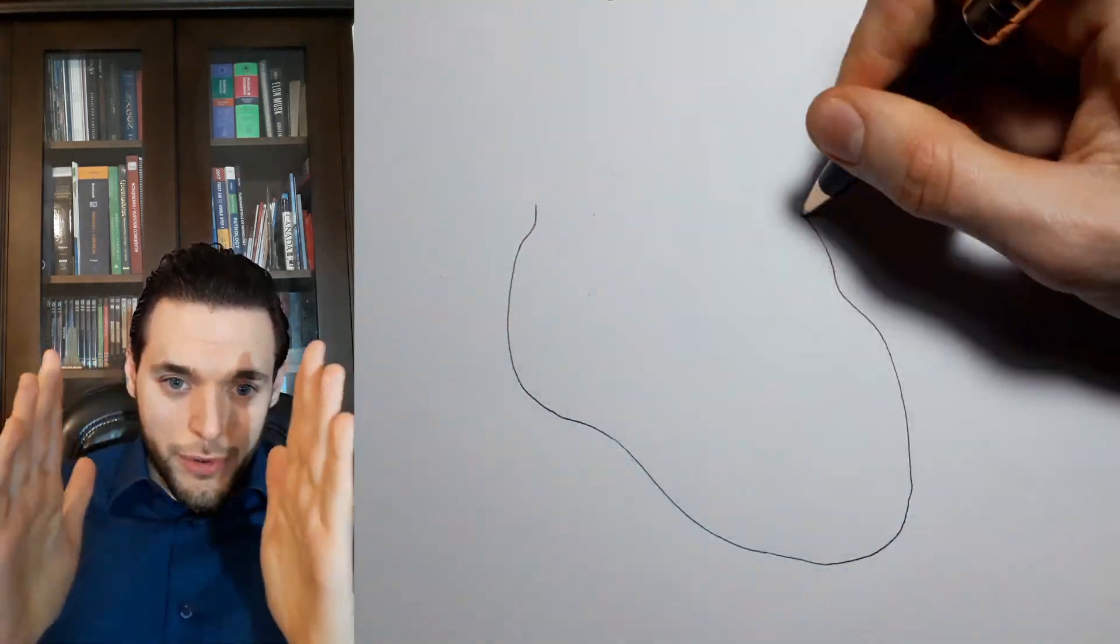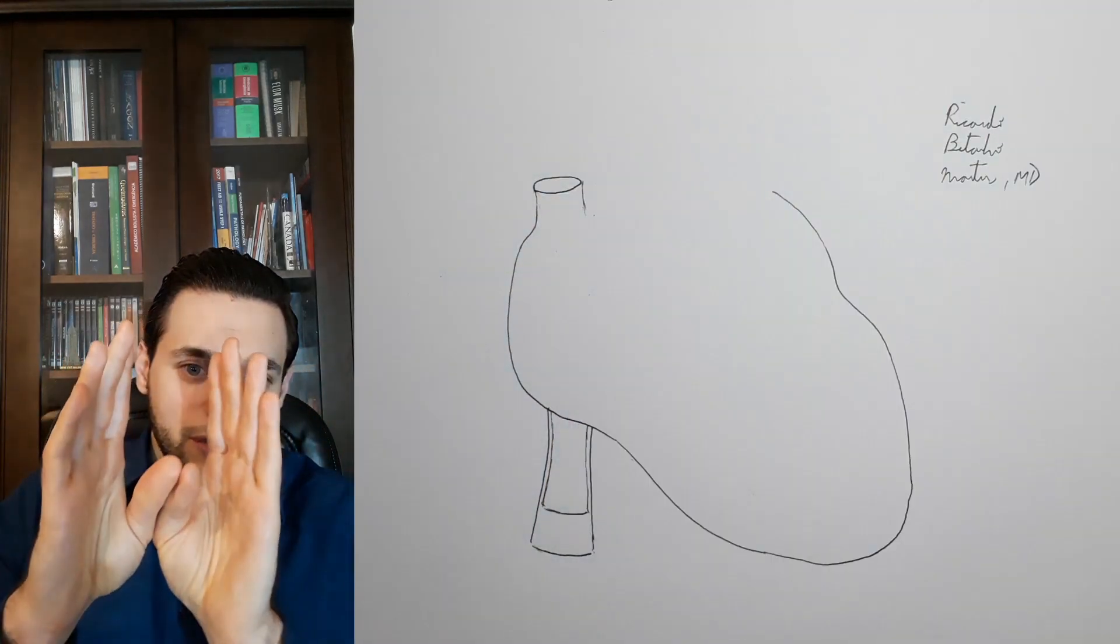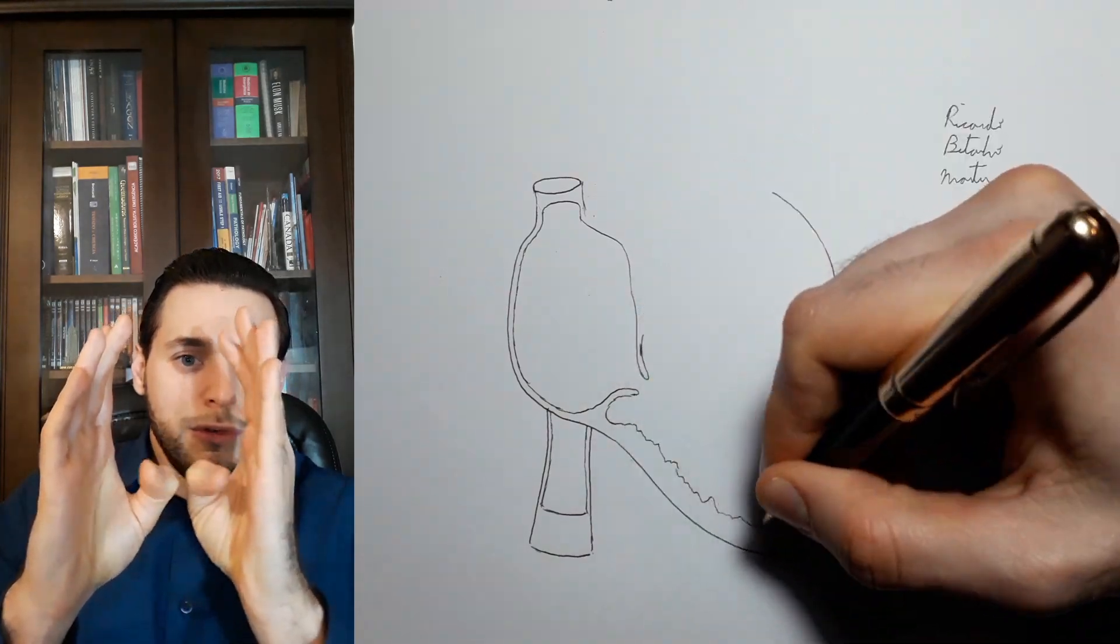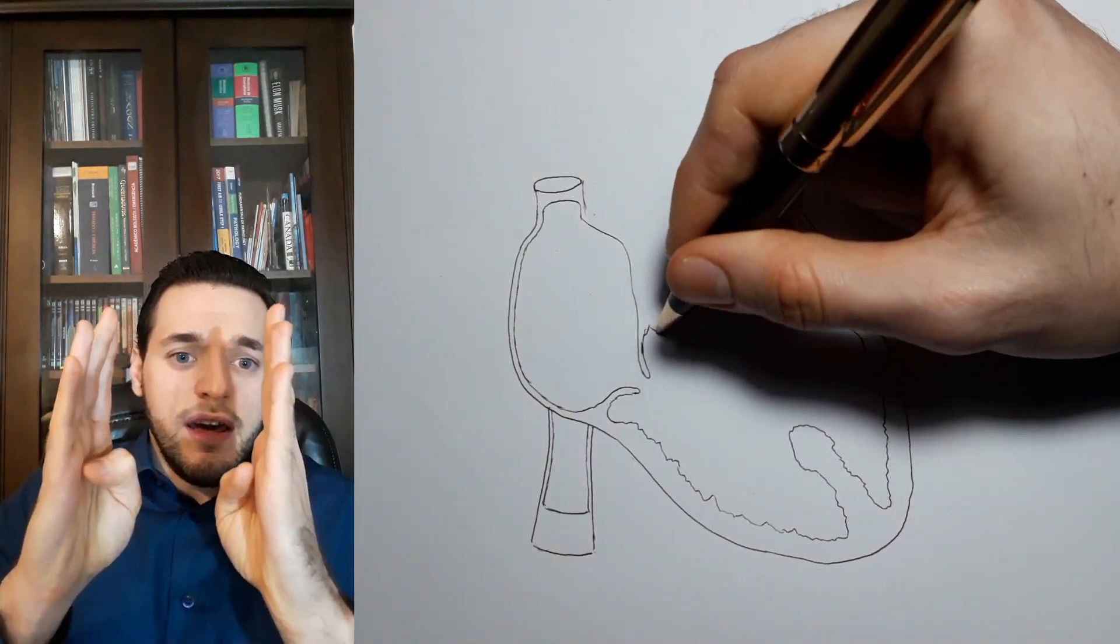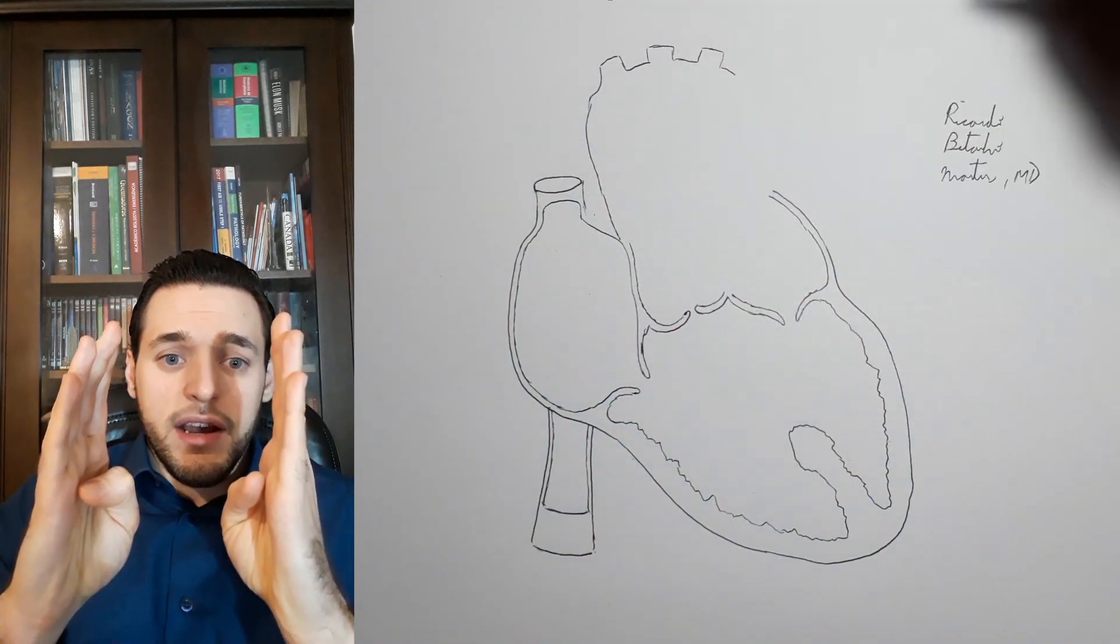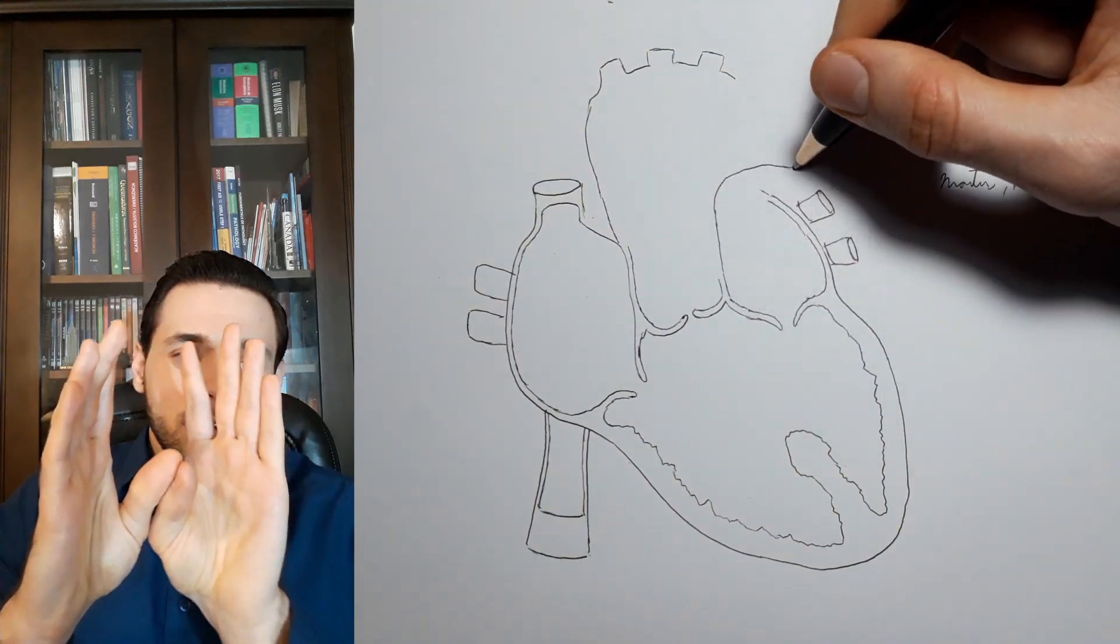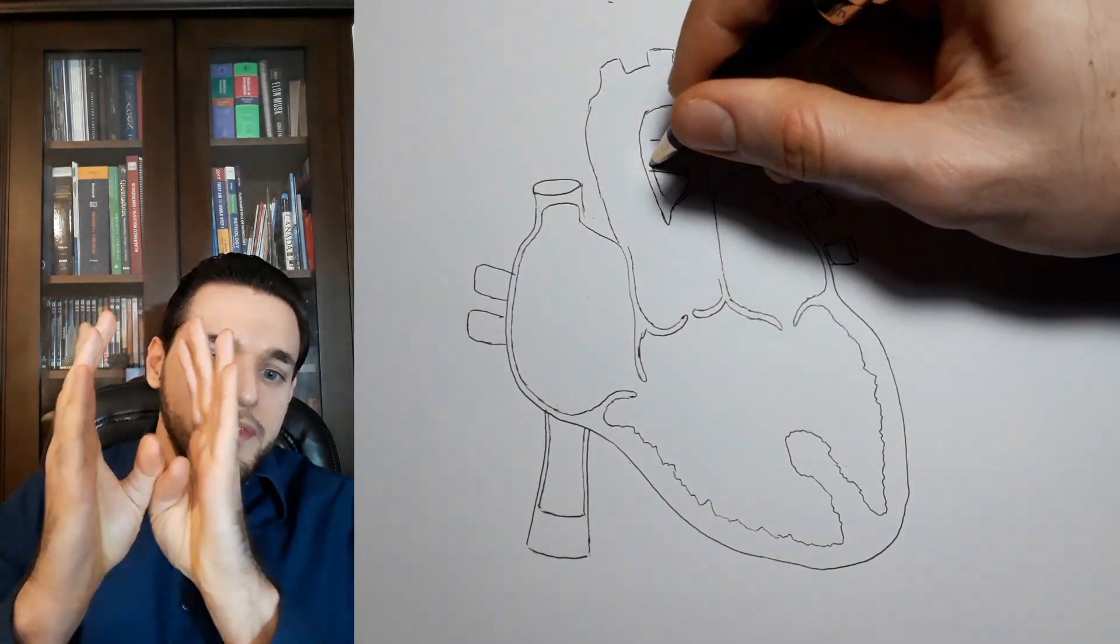Persistent truncus arteriosus is when the aforementioned structure fails to divide the pulmonary trunk and the aorta due to a lack or incomplete formation of the aorticopulmonary septum.